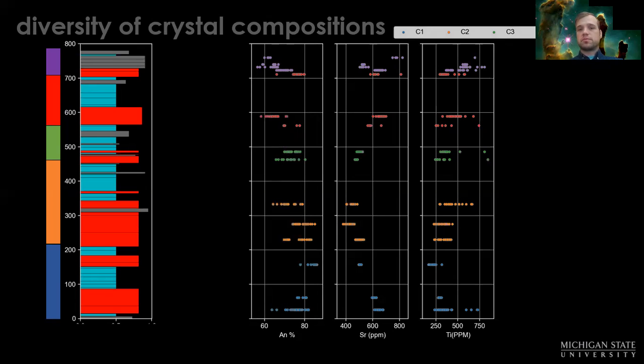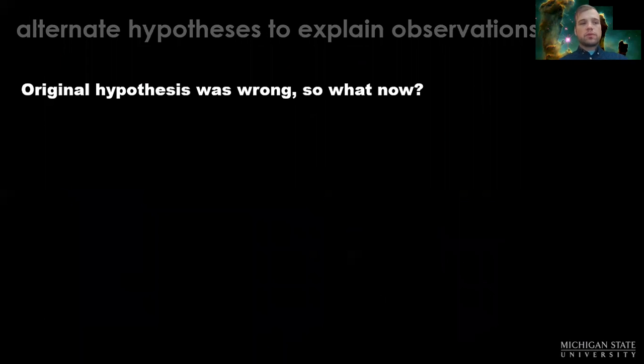Even though the composition of plagioclase changes with stratigraphic height, we don't see evidence of previous generations. So that original hypothesis didn't quite work out like we had hoped, but that's okay because we have a new observation of this lack of diversity.